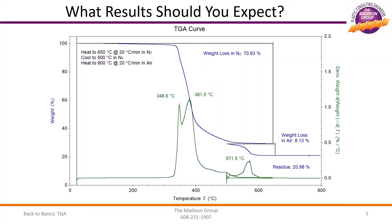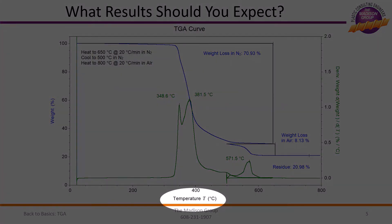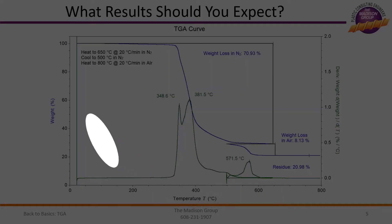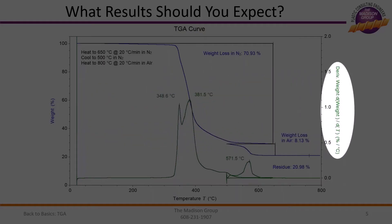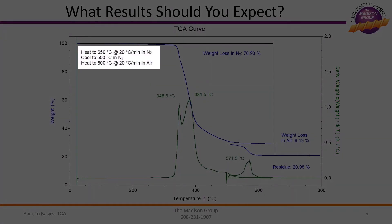This is a typical graph outputted from a TGA test of a polymeric material. This graph is plotted with temperature on the horizontal axis, although some analysts prefer to plot TGA results with respect to time. The percentage of the original weight remaining, called the weight percent curve, is plotted on the vertical axis. Additionally, the derivative curve of the weight percent with respect to temperature is also plotted, with its scale shown on the right vertical axis. This experiment involved heating the sample to 650 degrees C in an inert nitrogen atmosphere, then cooling to 500 degrees C in nitrogen, and finally switching to an oxygen-rich air atmosphere and heating to 800 degrees C.